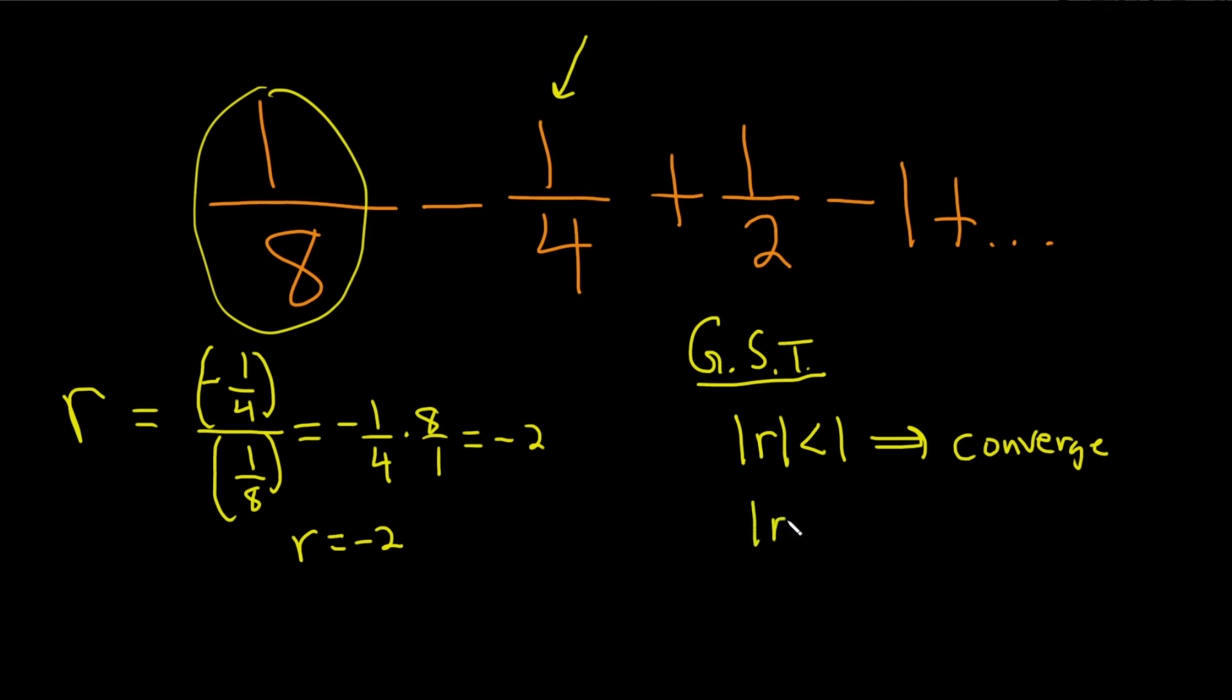If the absolute value of r is greater than or equal to one, then your series will diverge. So in this case, the absolute value of r is the absolute value of negative two, which is two, and that's greater than or equal to one.